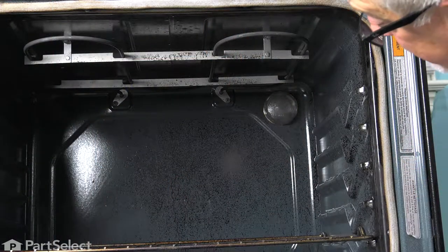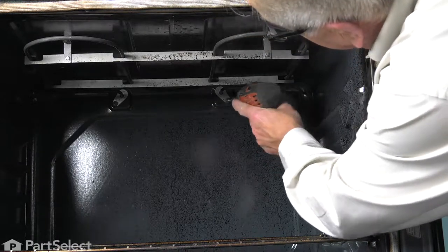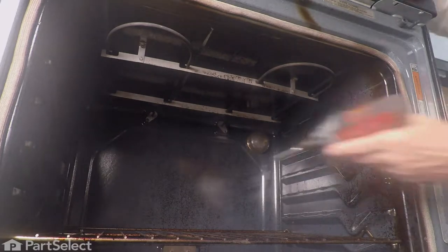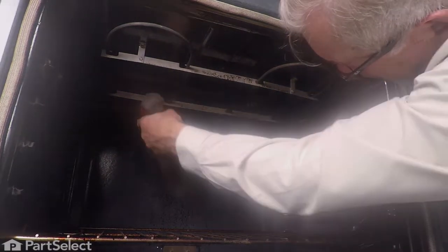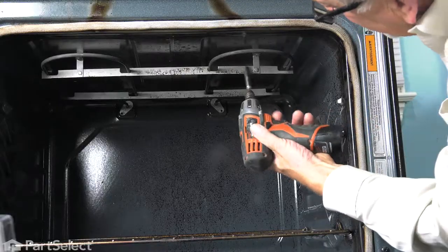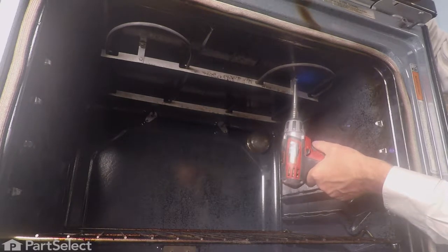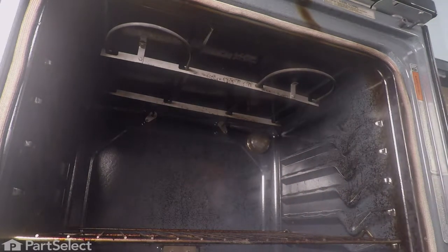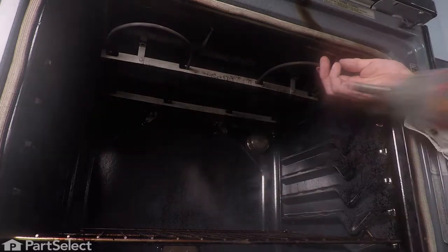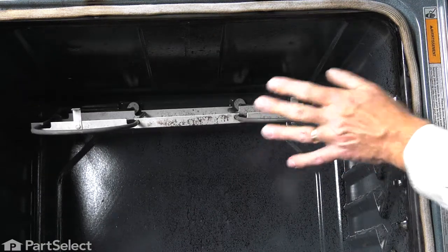Now, with the upper rack out of the way, we're next going to remove the two screws at the back that secure the tabs on the end of that element to the oven liner, and then we'll disconnect the two at the top. Just support that element when you remove the last screw, and then you can just let it hang there.